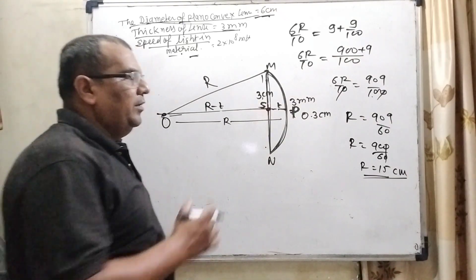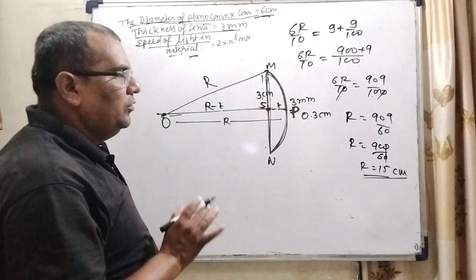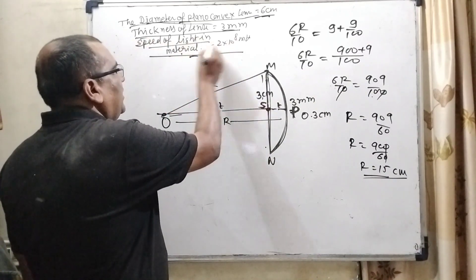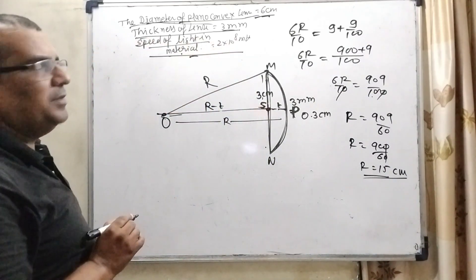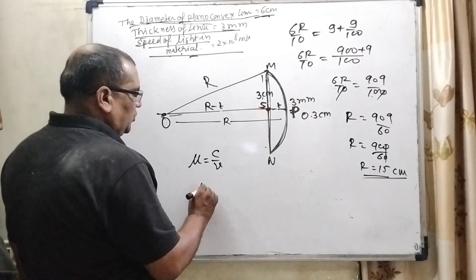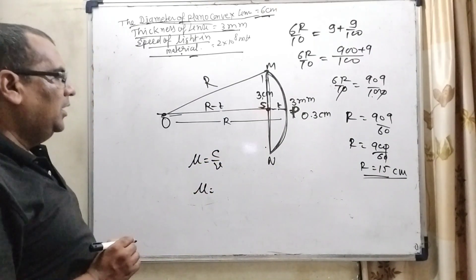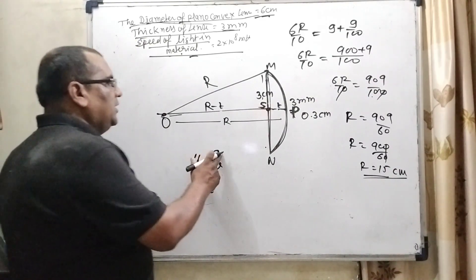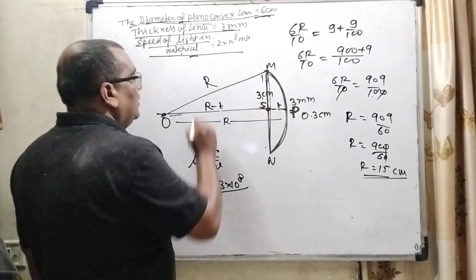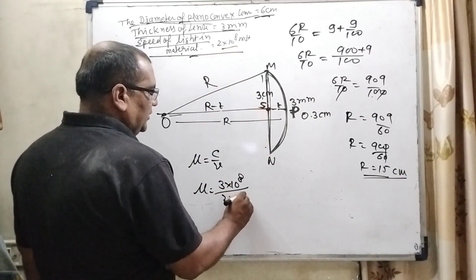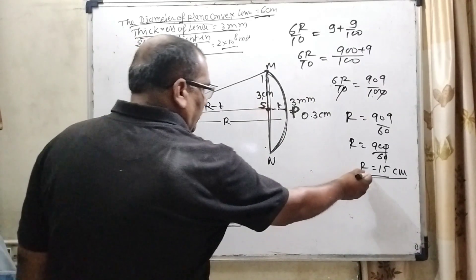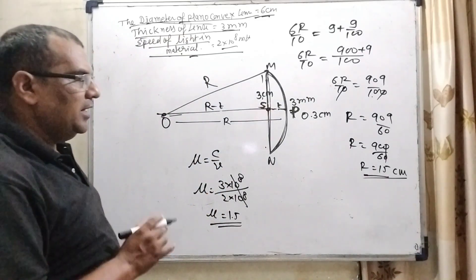Remember one thing, whenever we have to calculate, nearest rounding of value you should put here. And now second thing, second information. Here speed of light is given in material that is 2×10^8 m/s. So here we get mu. Mu is equal to, we know that C/V. What is C? Speed of light in air or vacuum. And V is the speed of light in material. So here C is 3×10^8 and what is V? V is given 2×10^8. So here we get the value of mu as 1.5.